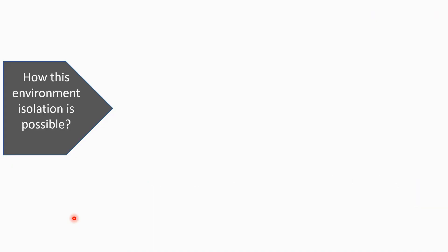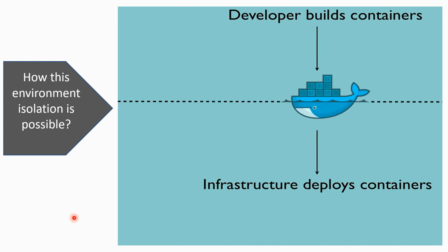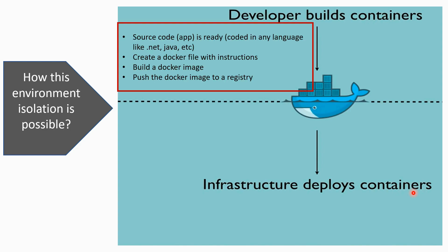How is this environment isolation possible? Here is the two-step process: a developer builds containers and the infrastructure engineer deploys containers. When a developer builds a container, it is assumed the source code or application is already coded in any language of their choice — .NET, Java, any coding framework. Once the source code is ready, the developer creates a Dockerfile with instructions and builds a Docker image.